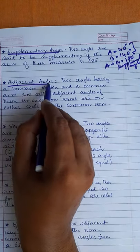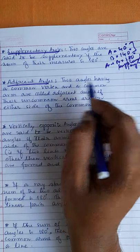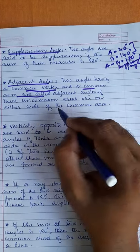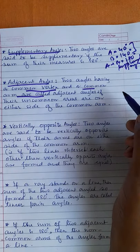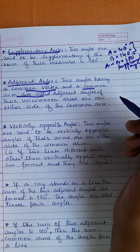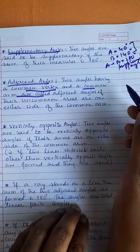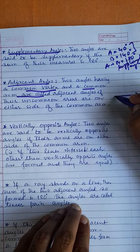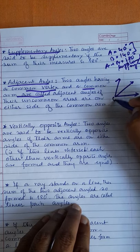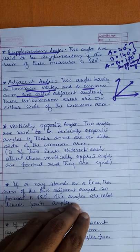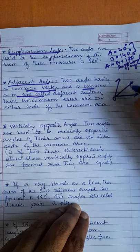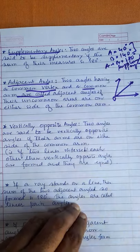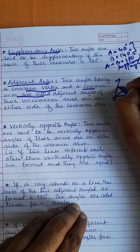Adjacent angles — two angles having a common vertex and a common arm are called adjacent angles. An angle has two arms and a common vertex. The common arm is shared, and these two angles are on the other sides of the common arm. These angles are called adjacent angles.